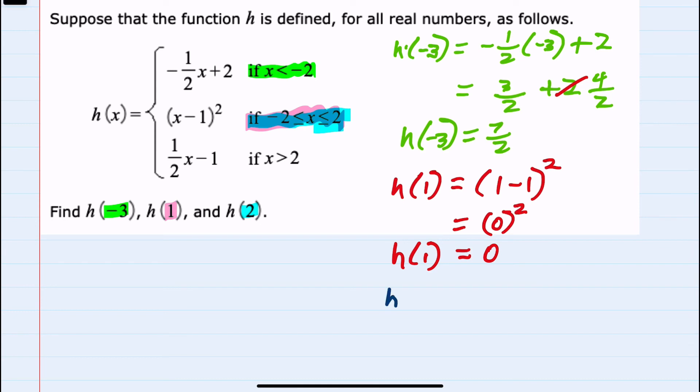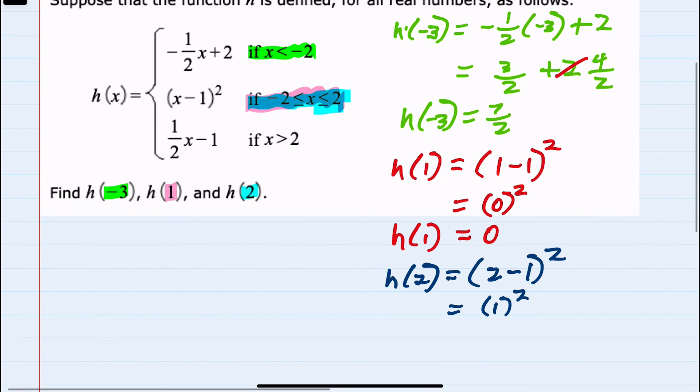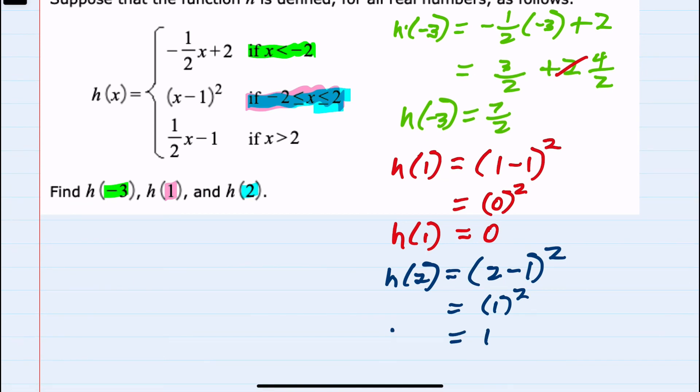So to find h of 2, I'll also substitute into that middle piece. Replacing x with 2 would be 2 minus 1 quantity squared. Inside the parentheses would be 1 squared. So h of 2 is 1.